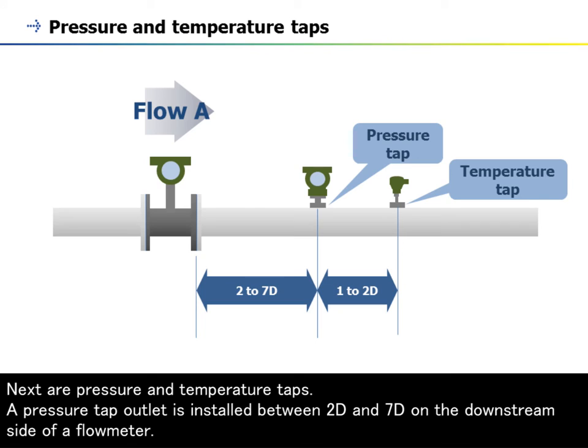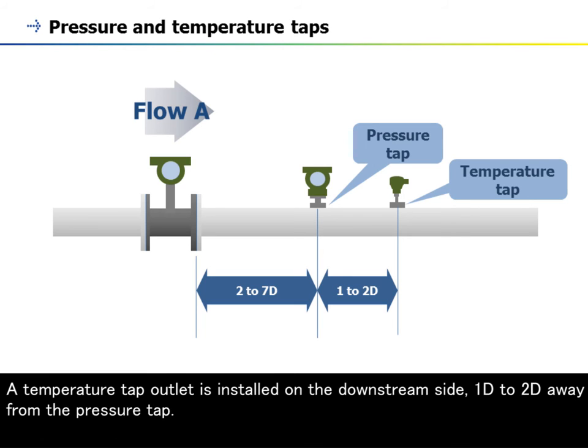Next are pressure and temperature taps. A pressure tap outlet is installed between 2D and 7D on the downstream side of a flow meter. A temperature tap outlet is installed on the downstream side, 1D to 2D away from the pressure tap.